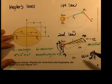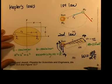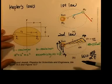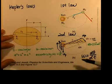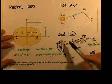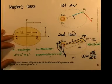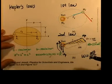When the planet is relatively far from the sun, it has a smaller angular velocity. When the planet is close to the sun, it has a very large angular velocity. That is Kepler's second law: the radius vector drawn from the sun to a planet sweeps out equal areas in equal time intervals.